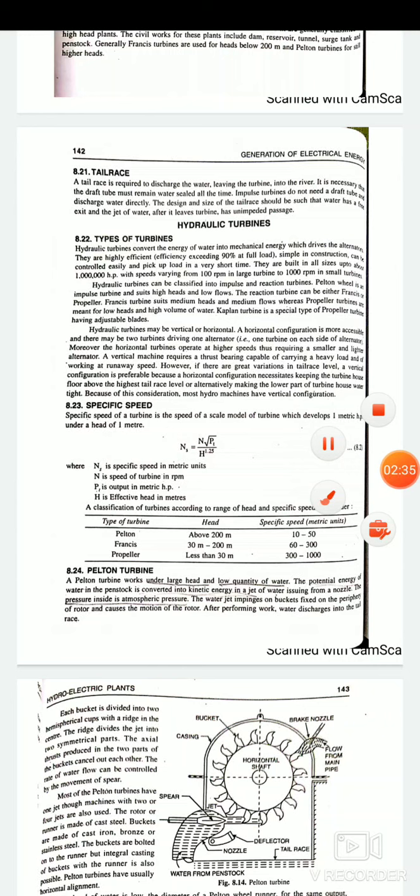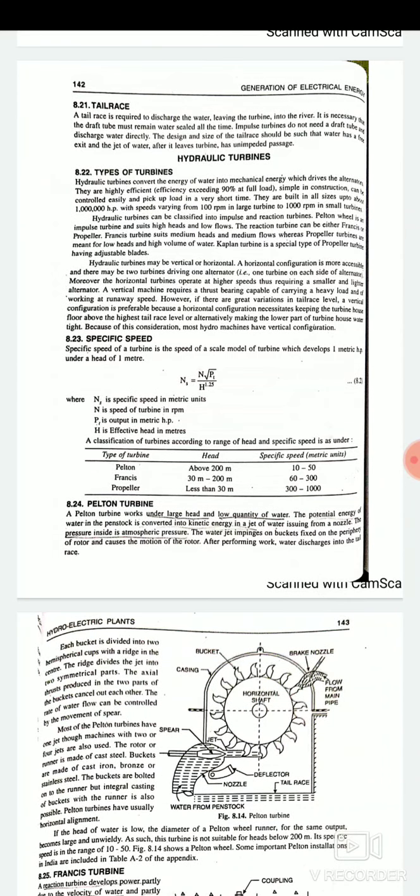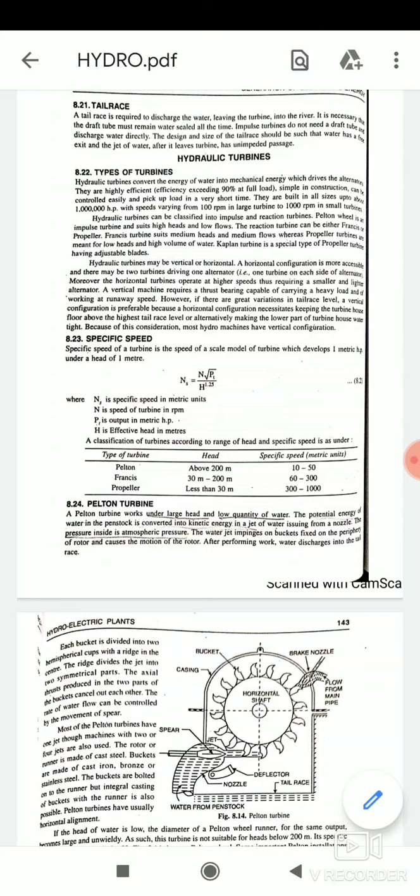First is types of turbines. As we know there are three types of turbines we use: Francis turbines, Kaplan turbines, and Pelton turbines. The hydraulic turbines convert the energy of water into the mechanical energy which drives the alternators. So this is the main function of the turbines which converts water into mechanical energy, and then mechanical energy can be used for the driving of the alternators which produce the electricity. The hydraulic turbines are the very important part of a hydroelectric power plants. They are highly efficient. Efficiency must be exceeding 90% at the full load. Simple in construction and can be controlled easily and pick up load in a very short time. They are built in all sizes up to 1 lakh HP with speeds varying from 100 RPM in large turbines to 1000 RPM in small turbines.